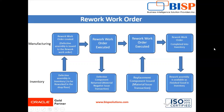The defective assembly is returned to the inventory after rectifying the defect and is completed as a finished good. You can rectify the defect by removing the defective component and replacing it, then placing the item in the inventory as a finished good. Now let's move on to the application and see how to create the rework work order in Oracle Fusion Supply Chain Management Manufacturing application.